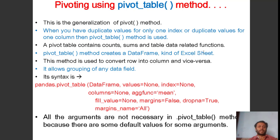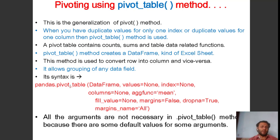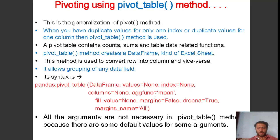The pivot_table method creates a data frame like an Excel sheet — in Excel you can also create pivot tables. This method is used to convert rows into columns and vice versa, and it allows grouping of any data field. The syntax is: call the data frame name with the pandas object dot pivot_table method, then pass the data frame, values, index, column, and aggregate function arguments.